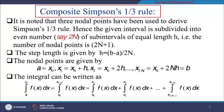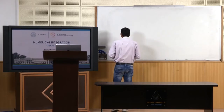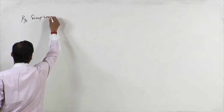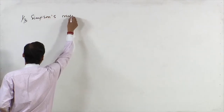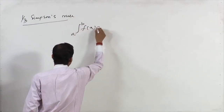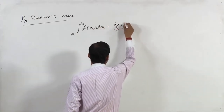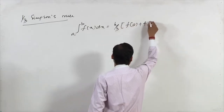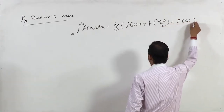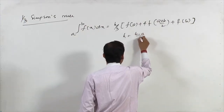Last class we discussed this Simpson's 1/3 rule. The formula for Simpson's 1/3 rule for integration from a to b of f(x) dx can be written as h/3 times [f(a) + 4f((a+b)/2) + f(b)], where h is defined as (b minus a) / 2.